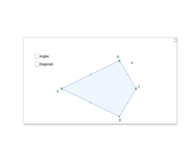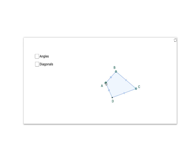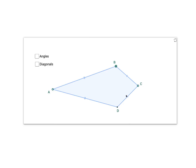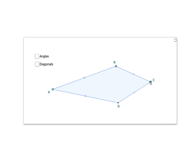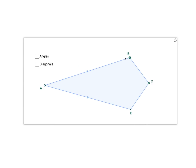Here we have a kite and I'm going to move the points around — everything I create with this app is a kite. The little dashes tell you that this side and this side are the same length, always, no matter how I make this kite. The double dashes indicate that this side and this side are always going to be the same length no matter how I build this kite.